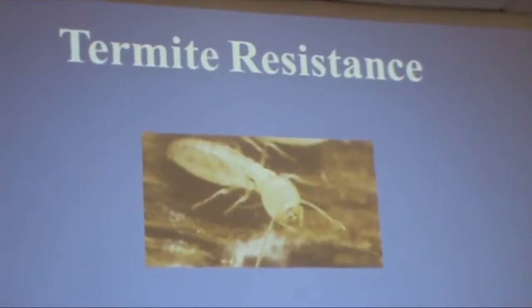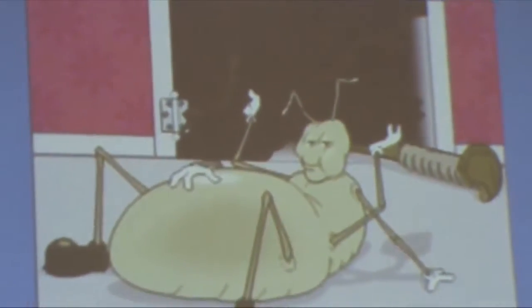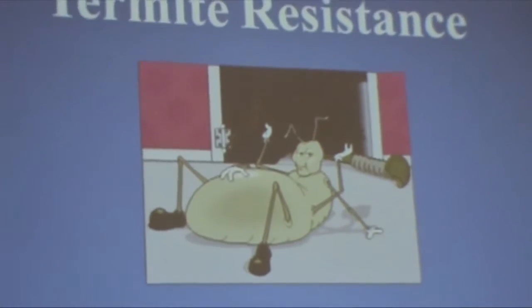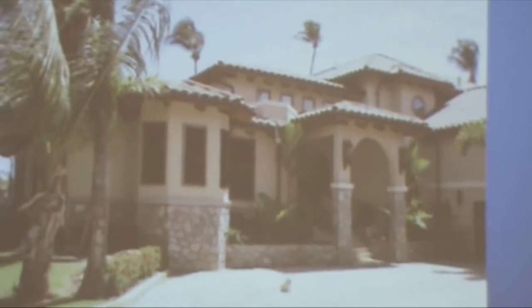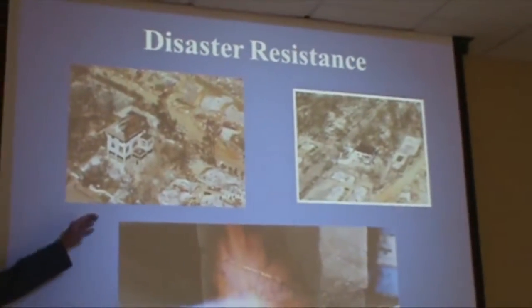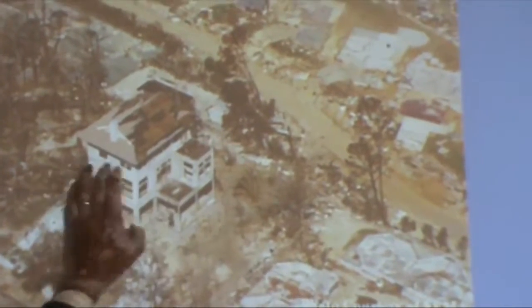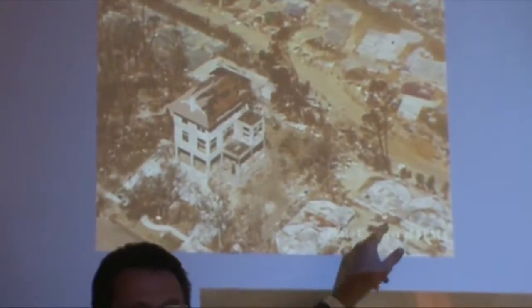Termite resistance is another important aspect of durability. A wood home is vulnerable to termites, but a concrete home avoids that issue entirely. Concrete homes can be beautiful — they don't have to be straight gray walls. Regarding disaster resistance: after a hurricane or tornado, concrete homes can stand alone while all surrounding homes have been removed from their foundations. The concrete foundations remain in place and the concrete home stands after the disaster.